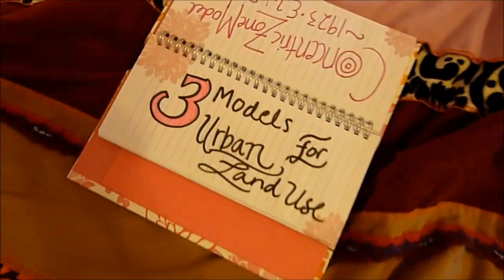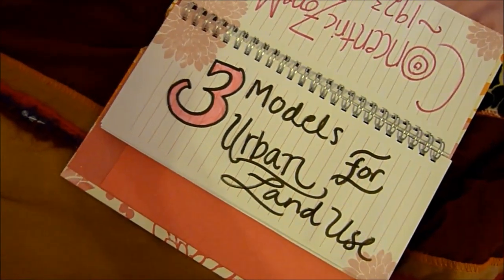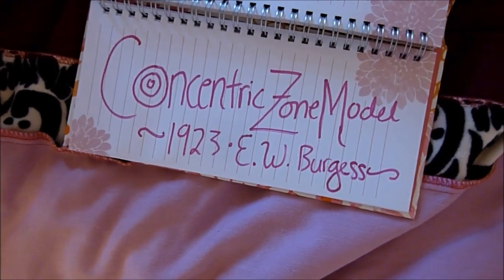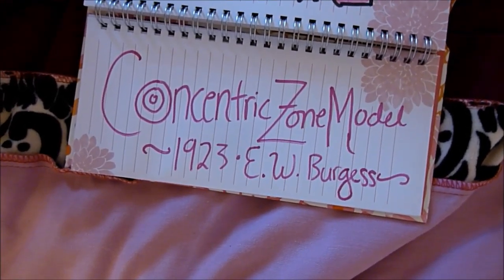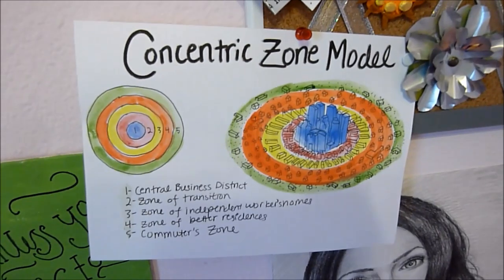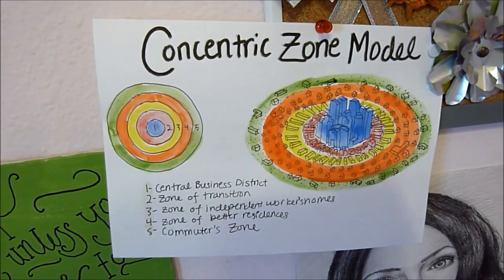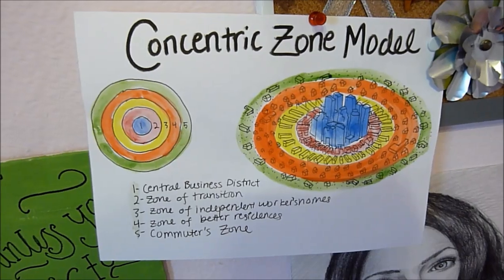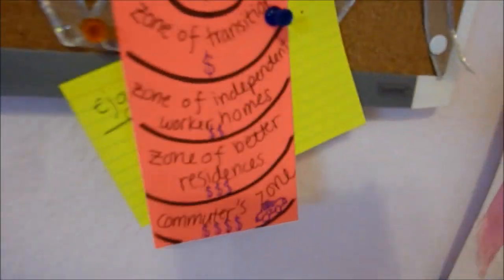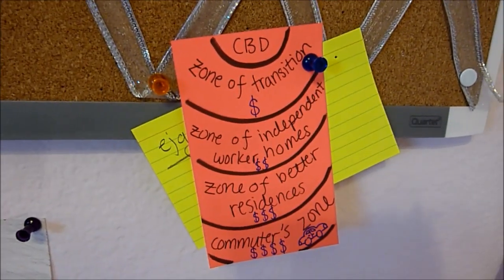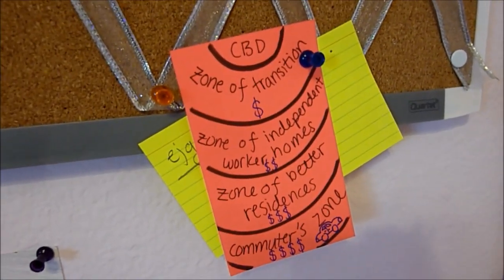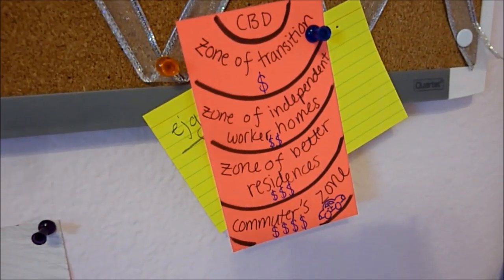Besides the two settlement geography theories, there are three different models of urban land use, which explains how cities are structured on the land they are given. The first model created is the concentric zone model, which was made in 1923 by E.W. Burgess. This model depicts cities as rings that grow outward from the central business district, which is the center. The first ring is the zone of transition, from businesses and industries to residential areas. As the rings grow outward, the cost of residences increases so that the people furthest from the CBD are the richest and the people living in the inner rings are the poorest. This model is explained by people's desire to have their own land so that ones who can afford the cost of transportation can live further out.